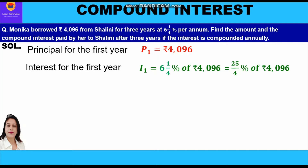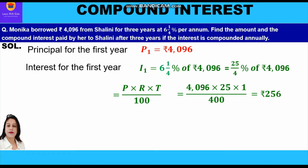We shall apply the simple interest formula for one year: PRT upon 100, which is equal to 4096 into 25 into 1 upon 400. 400 has come because we have multiplied 4 into 100. Whenever we remove the percent sign we keep 100 in the denominator because percent means per 100. That is how 400 has come in the denominator. On solving, we get rupees 256 as the interest for the first year.